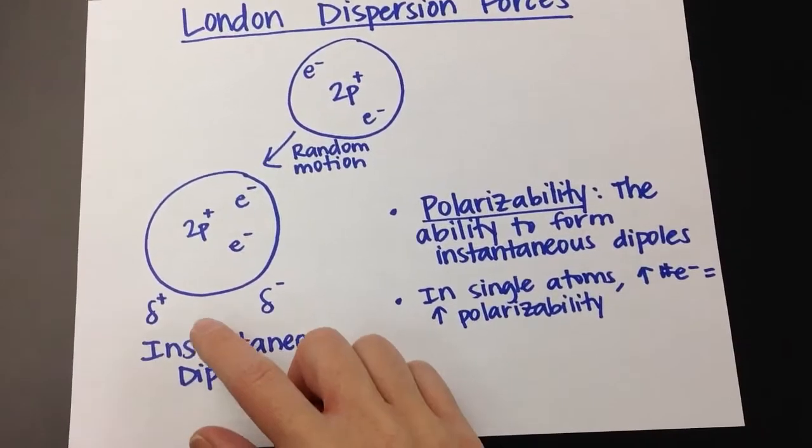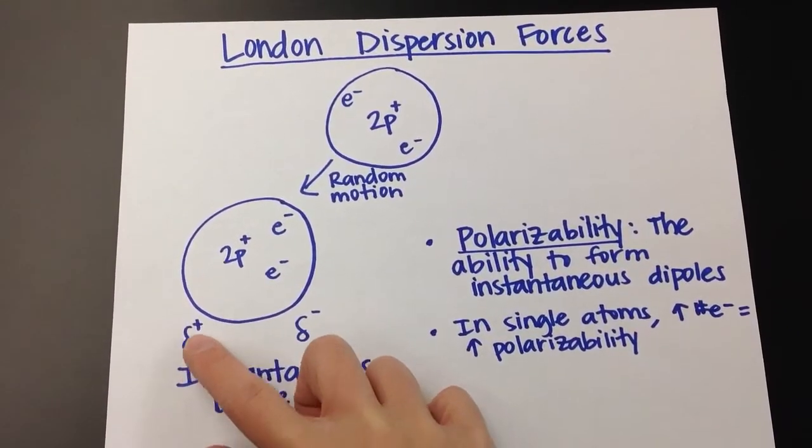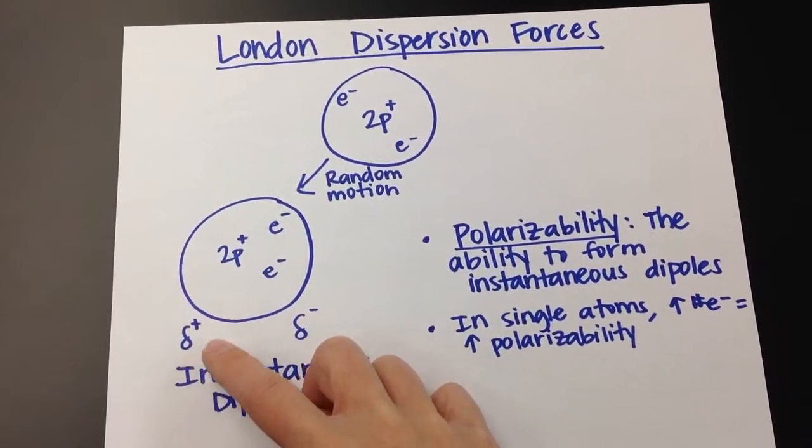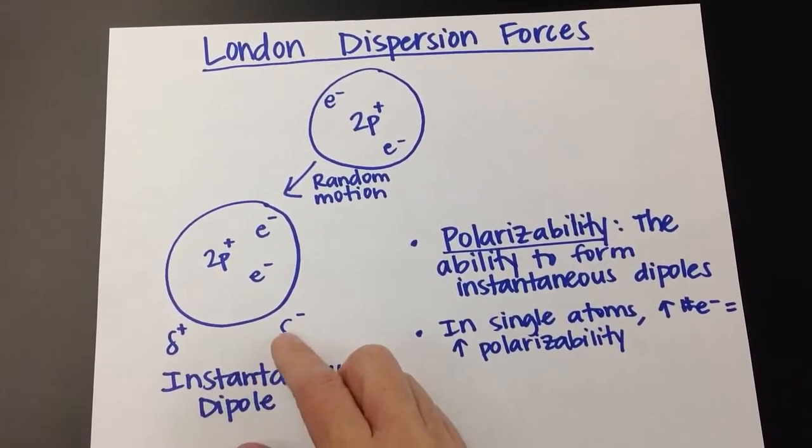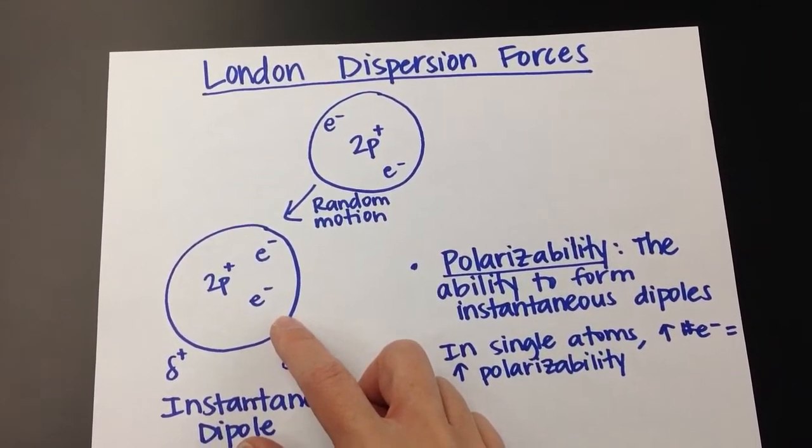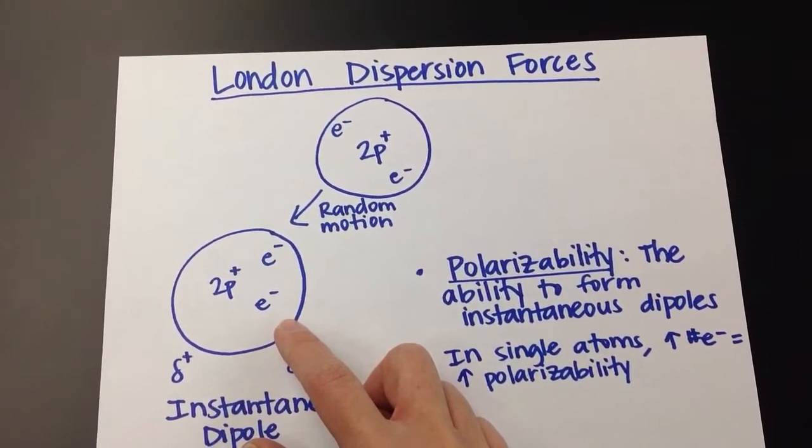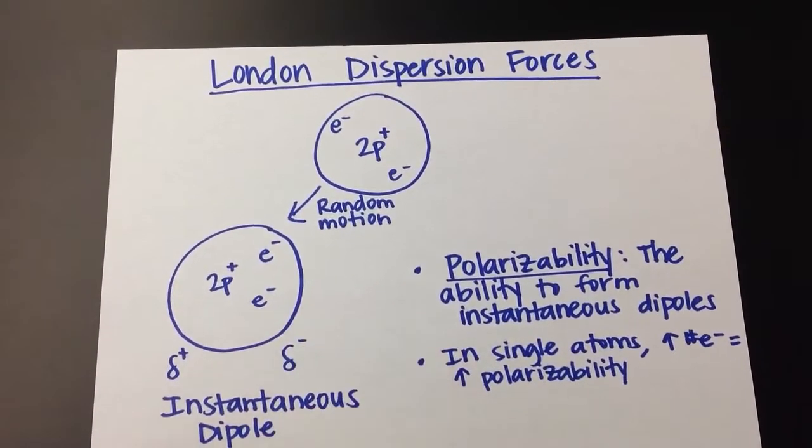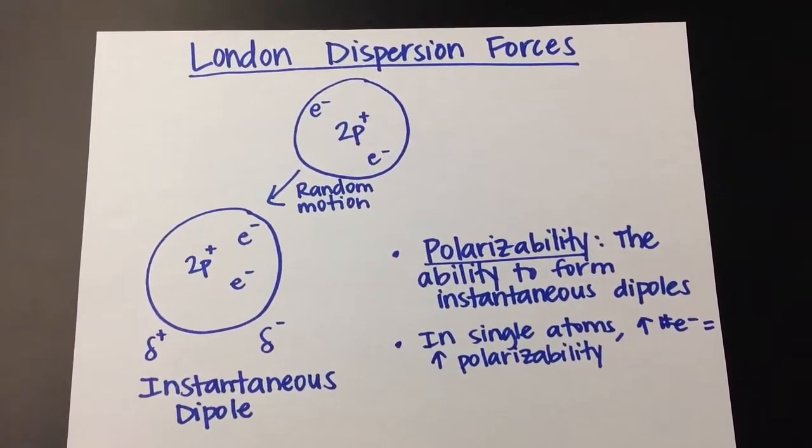So for that split second we have what's formed an instantaneous dipole, which means for that split second this side of the atom is positive and this side is slightly negative. That delta, lowercase delta, just means partial. So for that split second this atom, which we would not expect to be polar, acts like it is polar, and so it would be attracted to another atom nearby that could also be exhibiting an instantaneous dipole.